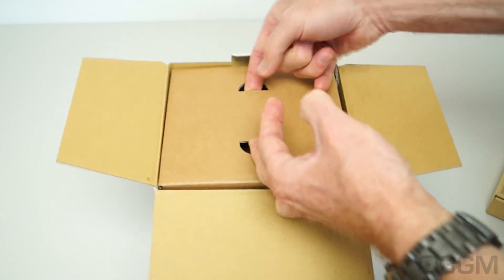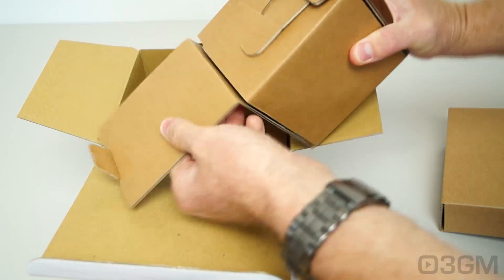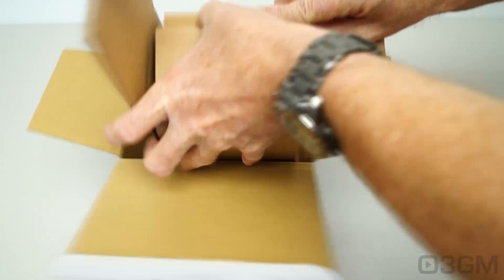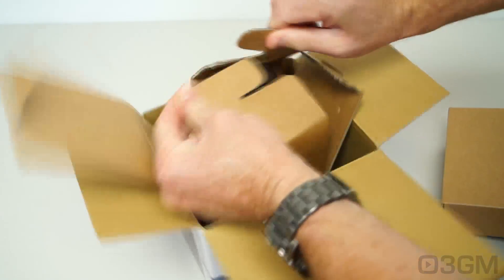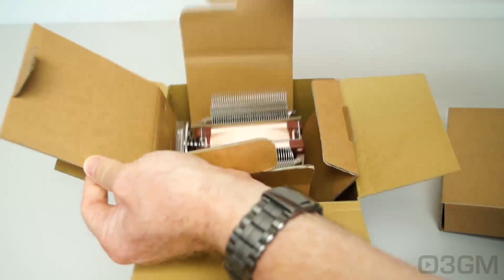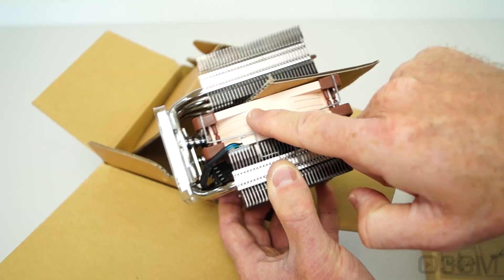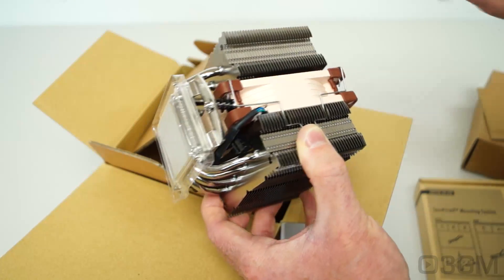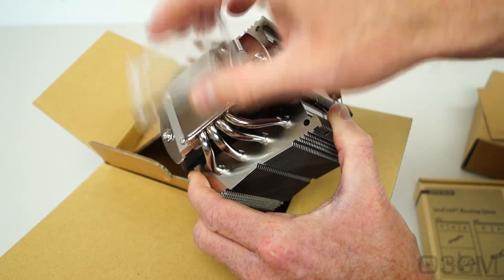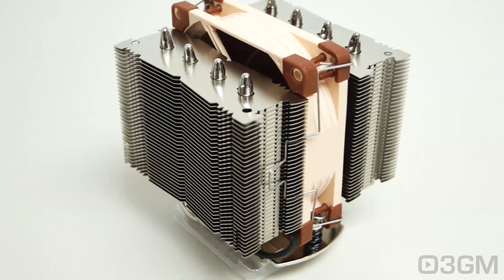Down below that, in another box, is the actual cooler, and it comes with the fan already mounted on it. Note how they have a piece of cardboard here sandwiched between the fan and this tower, and of course that's to prevent damage, and a piece of plastic here on the base. What a gorgeous looking low profile CPU air cooler.